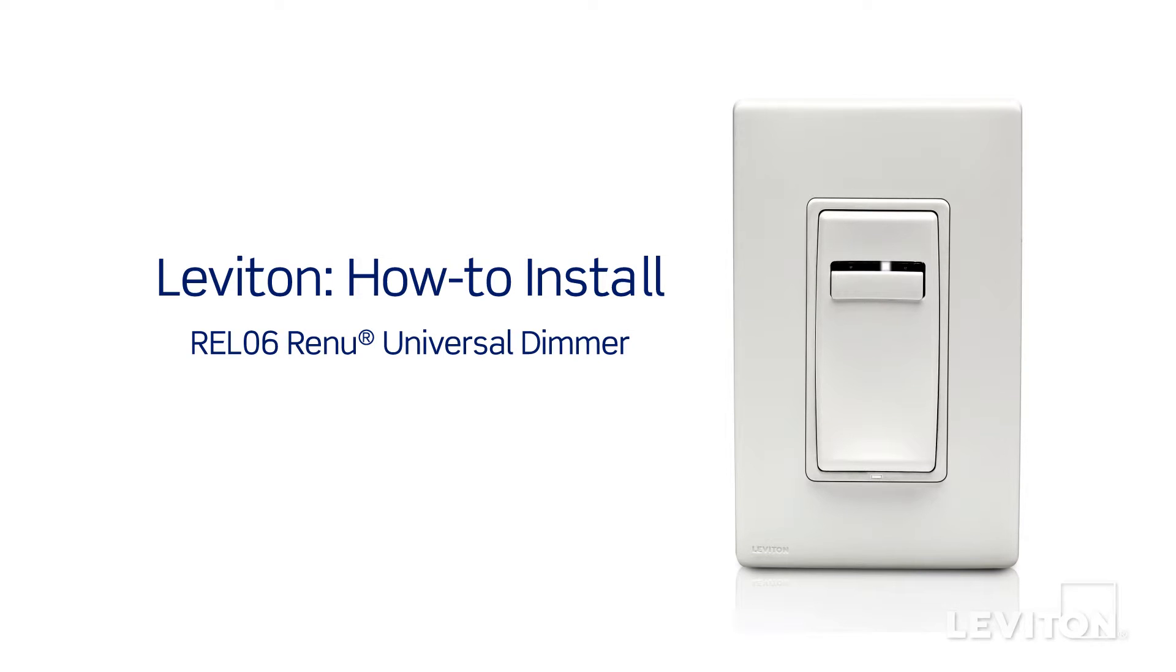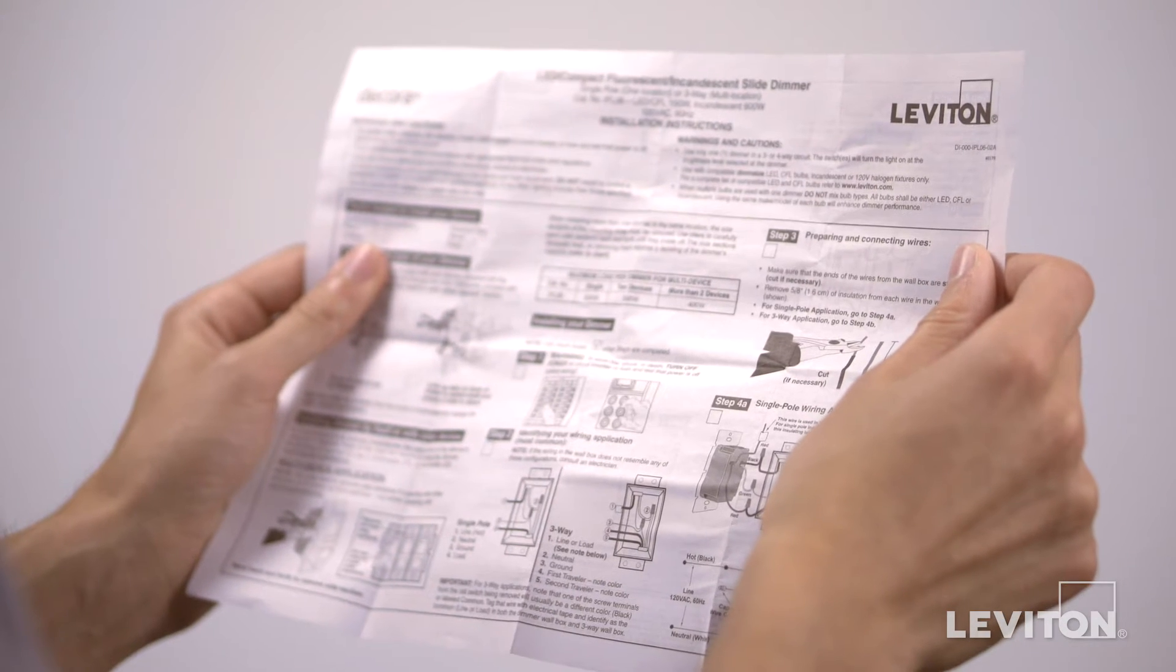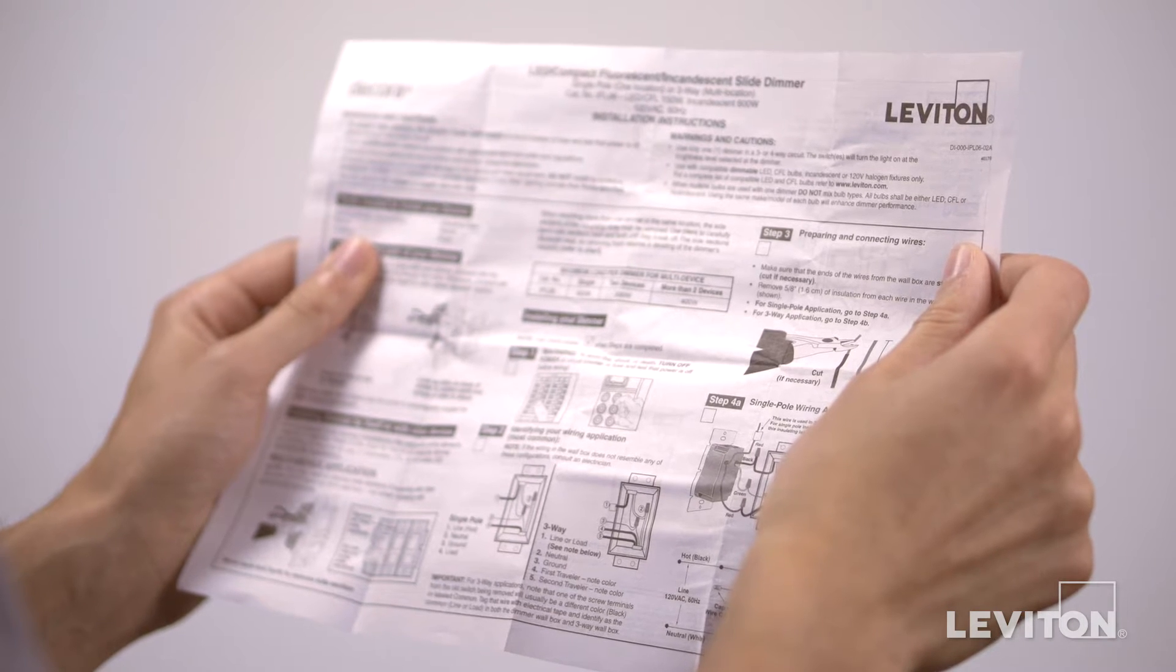This video will demonstrate how to install the Leviton REL-06 Renew Universal Dimmer. Please be certain to follow all wiring instructions and diagrams provided with the product.